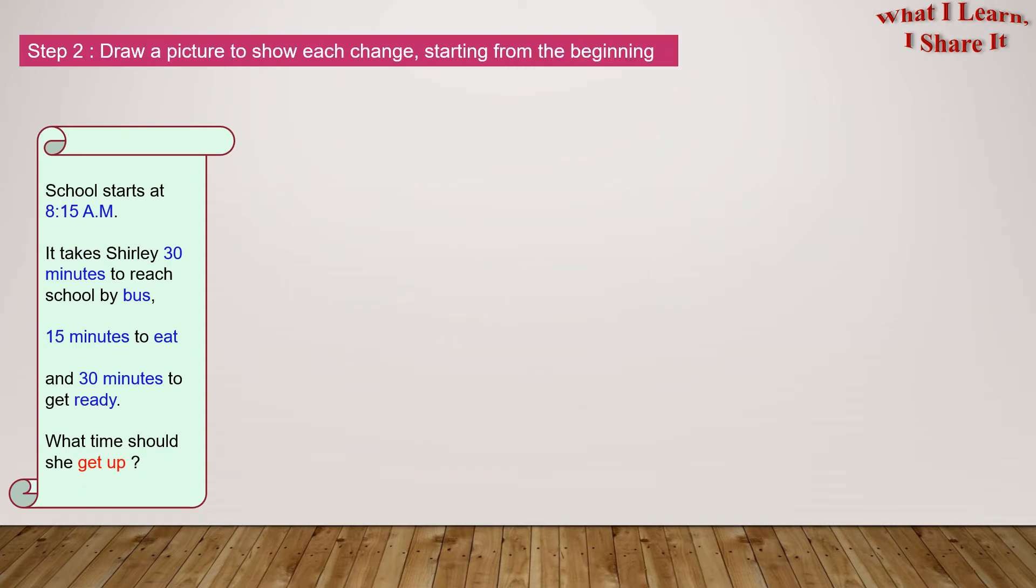Step 2: Draw a picture to show each change, starting from the beginning. So, here we are going to draw a number line. We don't know when she got up. She took 30 minutes to get ready, 15 minutes to eat, and 30 minutes to travel. And school starts at 8:15 AM.